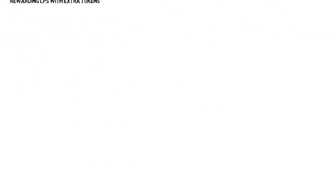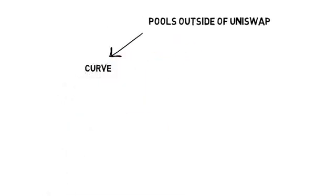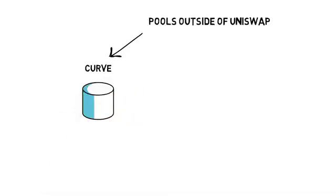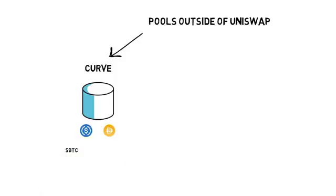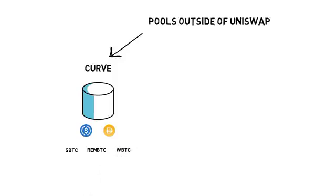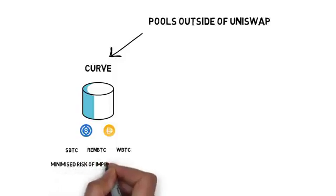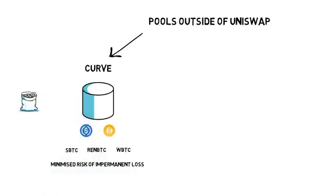So how about providing liquidity to other pools outside of Uniswap — would that also result in impermanent loss? Curve pools, for instance, only contain assets that should hold similar if not the same value. This could be different stablecoins like USDC or DAI, or different flavors of the same token such as SBTC, RENBTC, and WBTC. The risk of impermanent loss in such pools is greatly minimized as there is no asset whose value is volatile relative to the other. This is why Curve's liquidity pools, and more generally all liquidity pools that hold stable assets, usually attract way more capital than pools with non-stable assets.